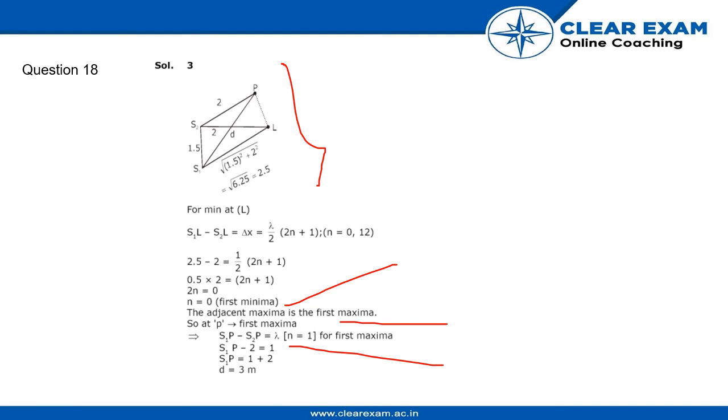At point P, first maxima: S1P minus S2P equals lambda n equals 1 for first maxima. S1P minus 2 equals 1, then S1P equals 3. So d equals 3 meters.